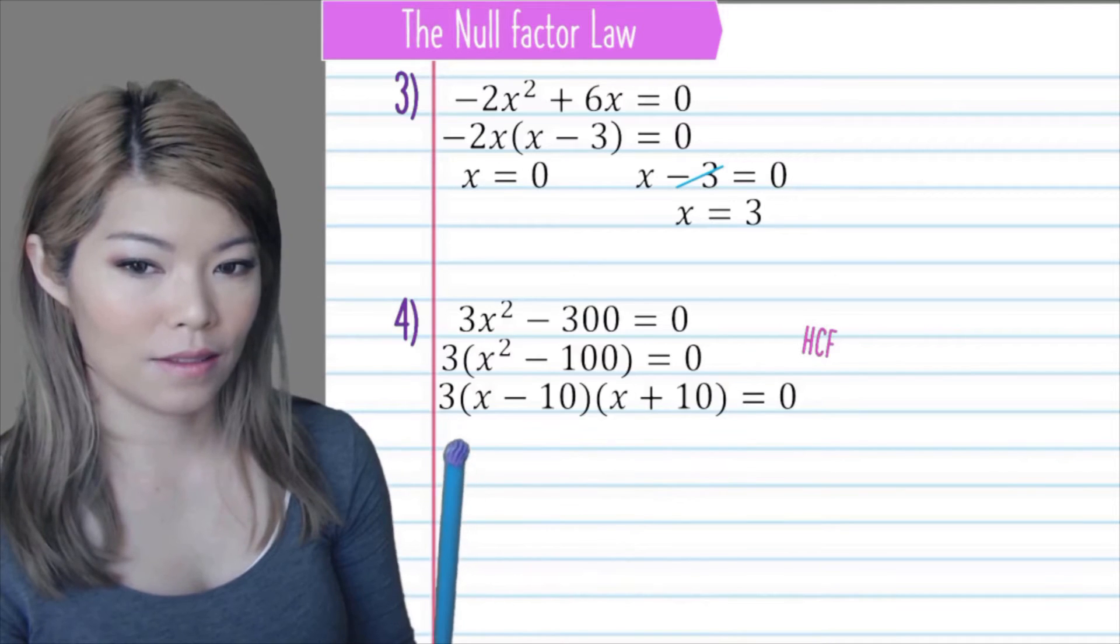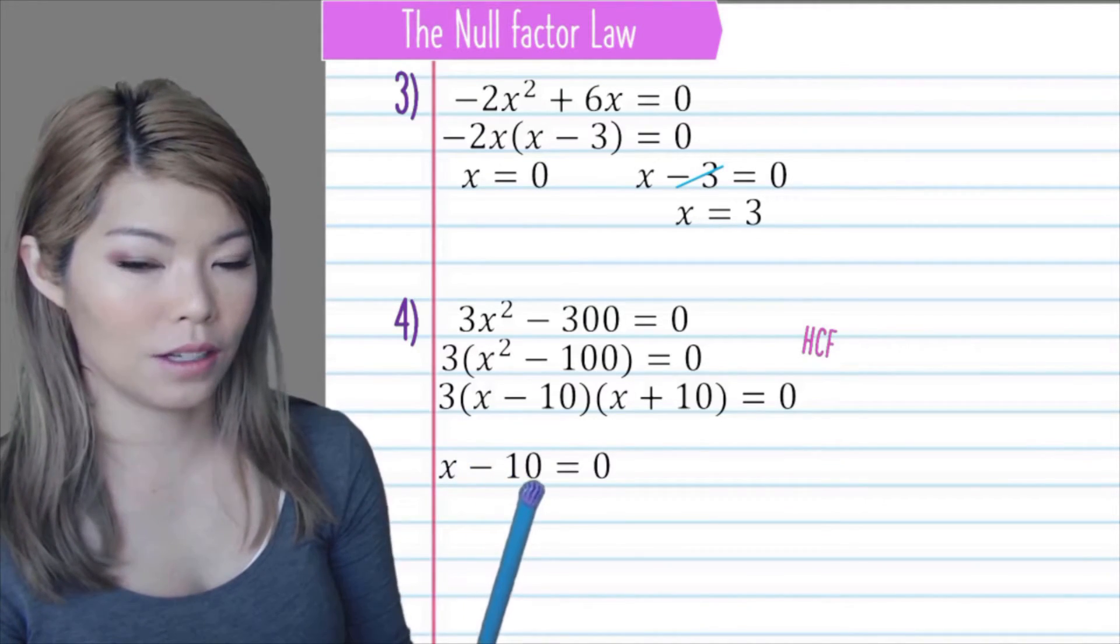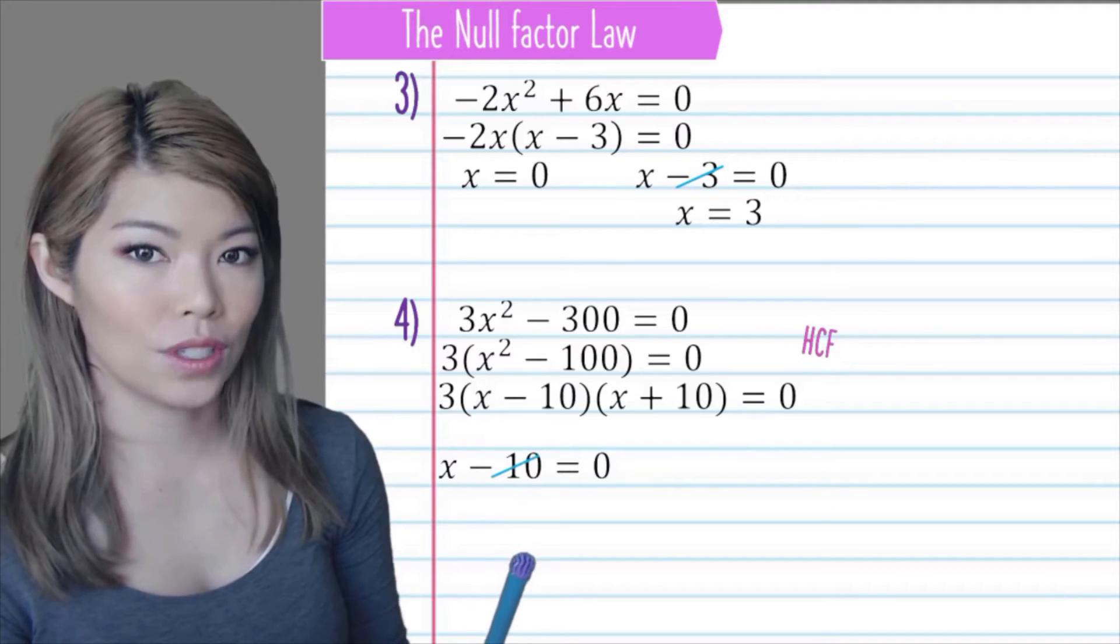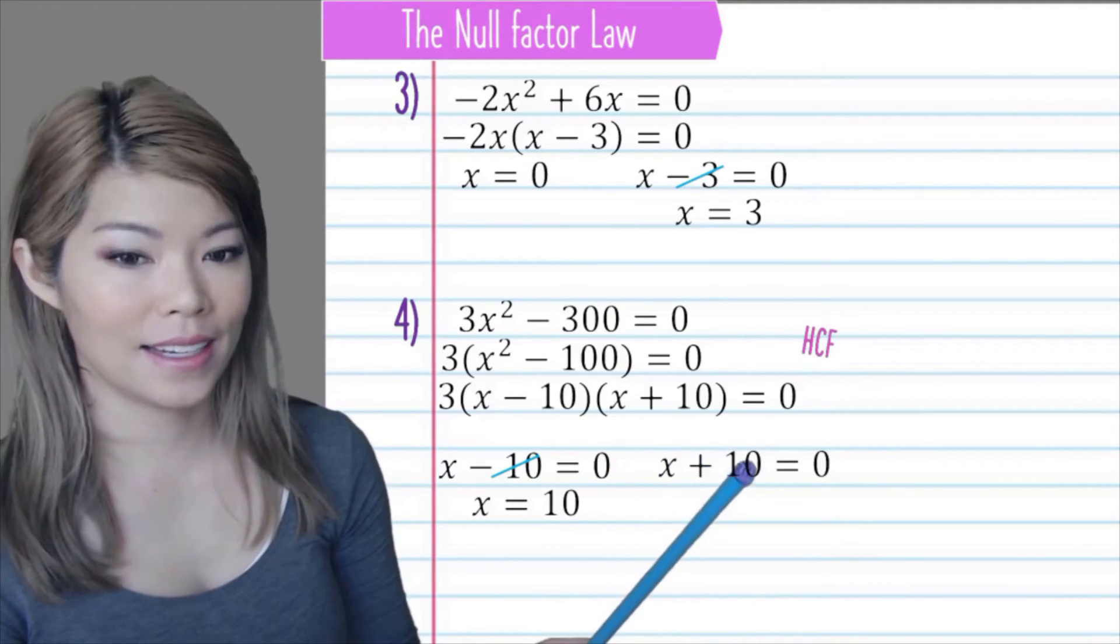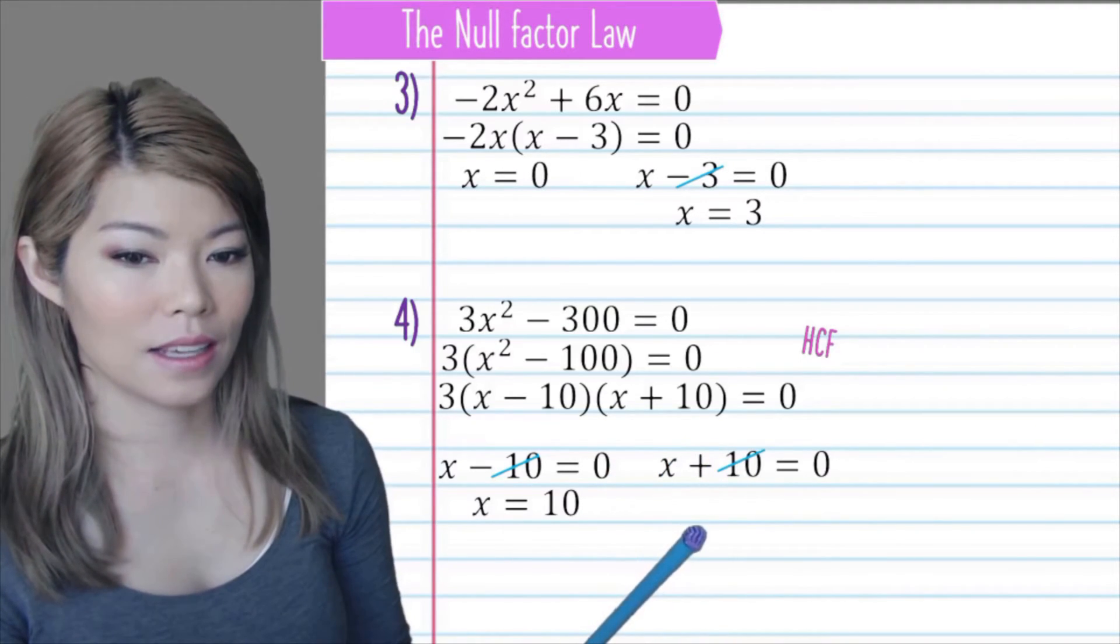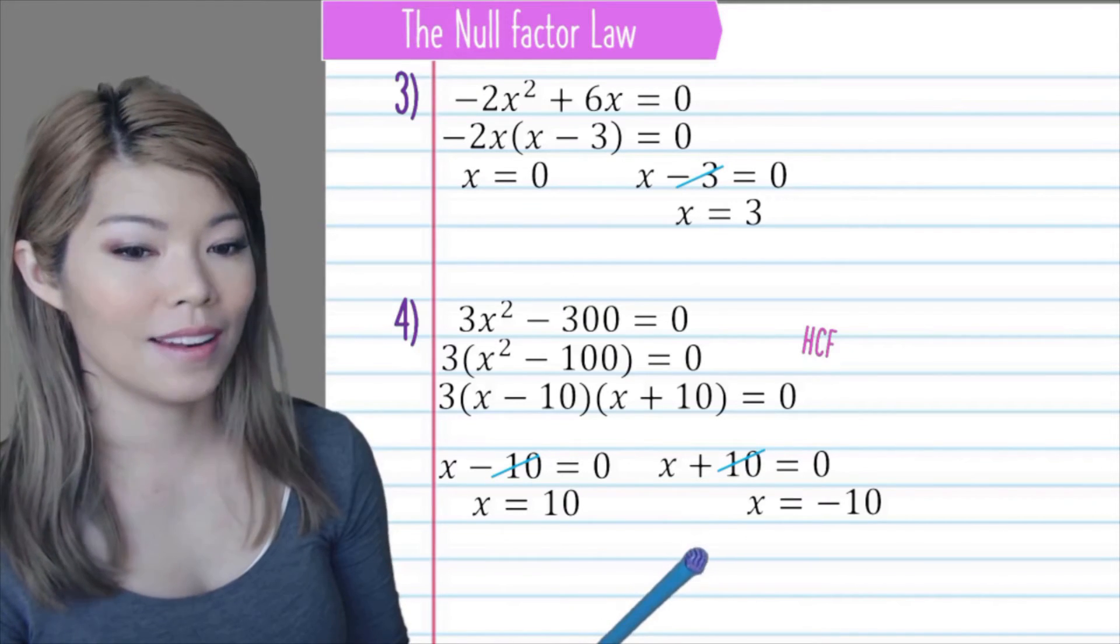And now 3 is not equal to 0. x minus 10 can be equal to 0. So x is equal to 10. And x plus 10 is equal to 0. So x is equal to, bring the 10 over, negative 10.